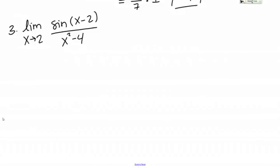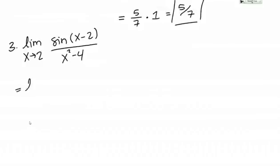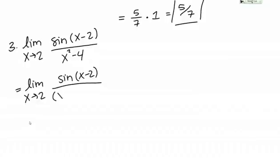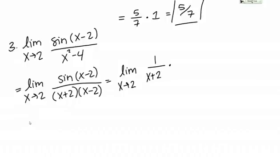I'm going to start by factoring the denominator to see what we're dealing with. I have sine of X minus 2 on top, and the denominator is a difference of squares, so I can write it as X plus 2 times X minus 2. This looks more promising because I have sine of X minus 2 in the numerator and a factor of X minus 2 in the denominator. I'll separate this limit into the limit as X goes to 2 of 1 over X plus 2, times the limit as X goes to 2 of sine of X minus 2 over X minus 2.